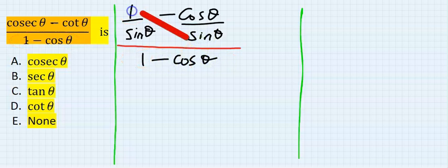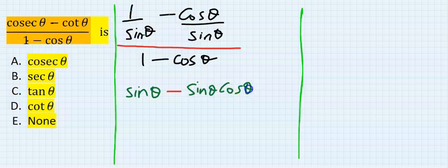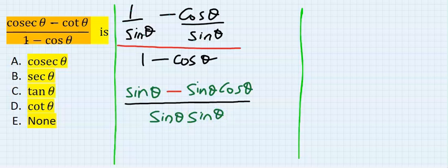This times this is sine theta. This is a minus. Next, this times this is sine theta cos theta. Next, this times this. Everything will go under to have sine theta sine theta, which is sine squared theta.